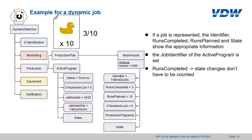The final example is for a dynamic job. Again the production plan is initialized and it has a job. The job is the same as in the static job example because the usage is exactly similar. Again the yellow ducks are produced first: three runs completed, ten runs planned. The job node ID of the active program shows the respective node ID of the machine job, and the job identifier shows the job identifier of the machine job. I have the runs completed, so I don't have to count state changes as I would in the program-only example.